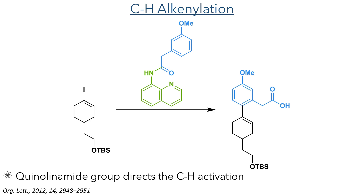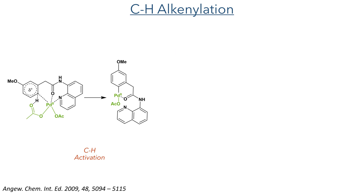This vinyl iodide species then took part in a C-H alkenylation reaction, utilising a quinolinamide group which directs the C-H activation. The first step is the coordination of a palladium acetate catalyst; the appended directing group directs the palladium catalyst towards the para-position of the methoxyphenol ring.